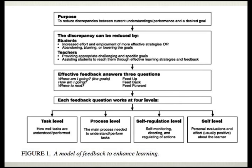The task level helps students understand how well they understand specific concepts or perform tasks. At the process level, the instructor focuses on the main processes needed to understand or perform tasks — for example, did the student skip a step or complete a step incorrectly? Self-regulation refers to someone's ability to monitor their own performance, and an instructor can give a student tips and strategies for better self-regulation. Finally, the self level involves the personal, but typically very vague, personal evaluations and perceptions a student has about him or herself.